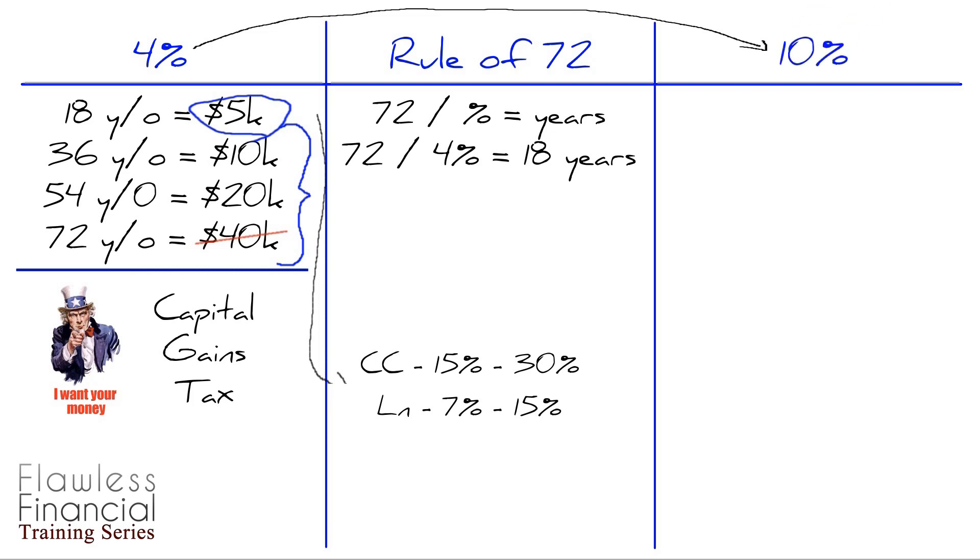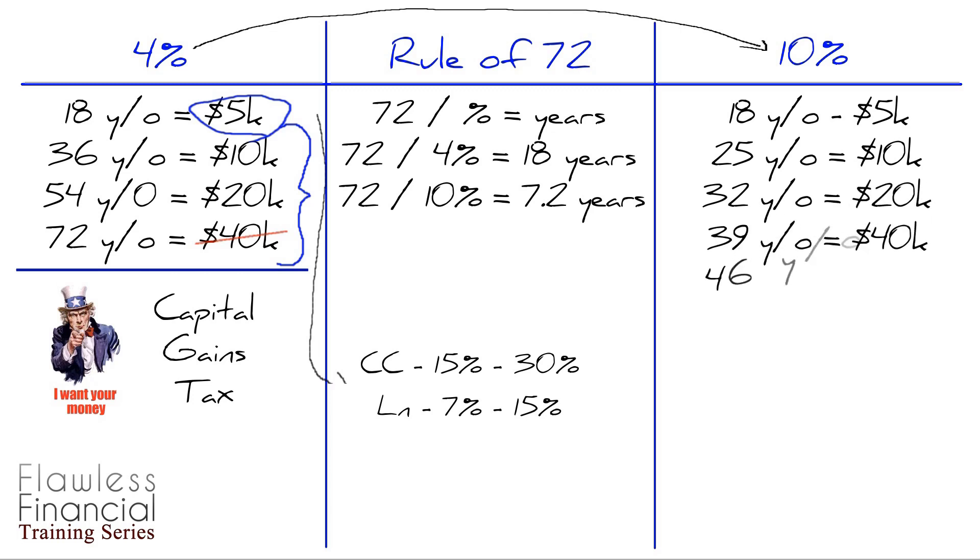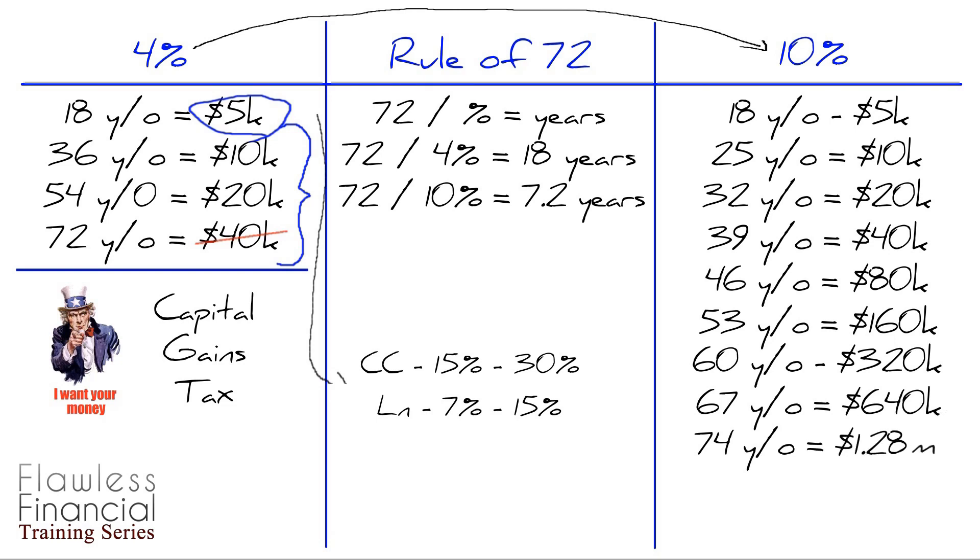So that same 18 year old person, if their money was inside an account that was paying them 10%, you just take 72, you divide it by 10 and it gives you 7.2 years. So let's say 7 years just to be nice about it. So 18, $5,000. Seven years later, it's going to be 25, $5,000 doubled is $10,000. Seven years later, they're 32, it turns to $20,000. At 39, it turns to $40,000. At 46, it turns to $80,000. At 53, $160,000. At 60, $320,000. At 67, $640,000. That's over half a million dollars. And at 74, right around the same time as the other guy, it's going to be $1.28 million that this person will have had if they were earning 10% instead of 4%. So let's say you even had to pay half of that in taxes and you only got to walk away with $640,000. I would much rather have $640,000 versus $40,000. I don't know about you, but I would definitely take the $640,000 any day of the week.